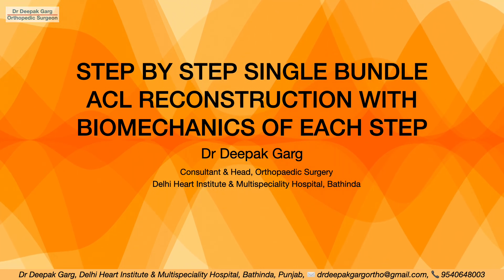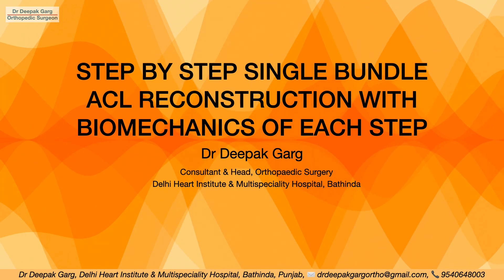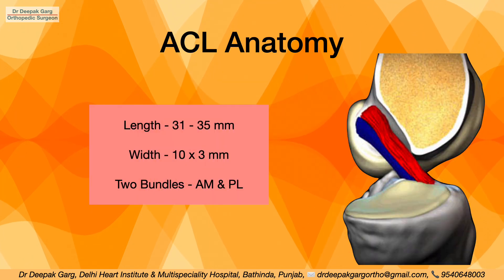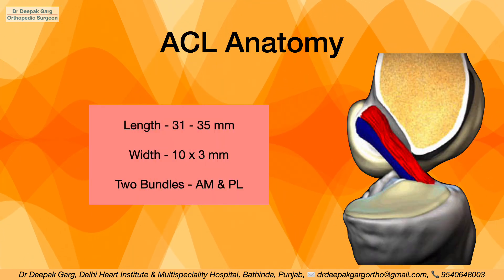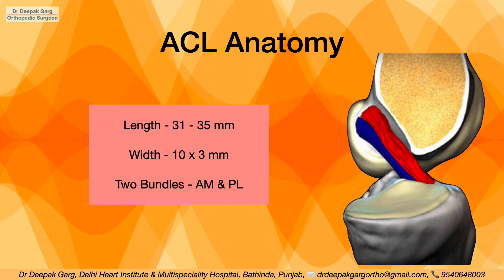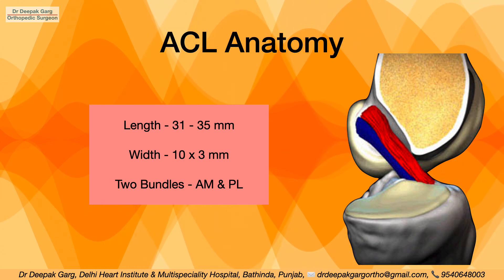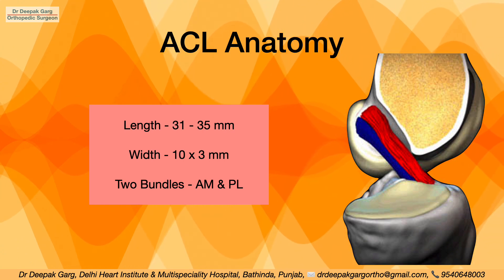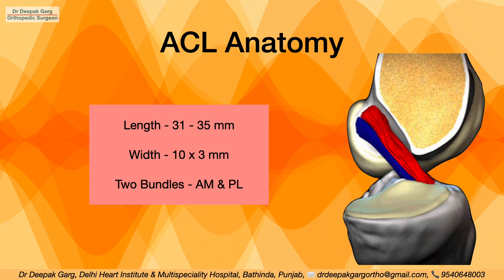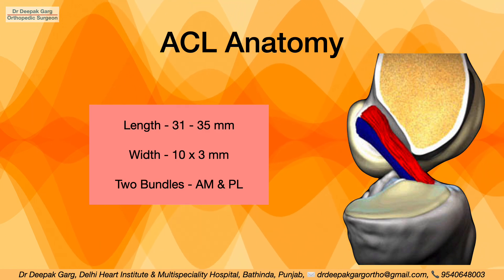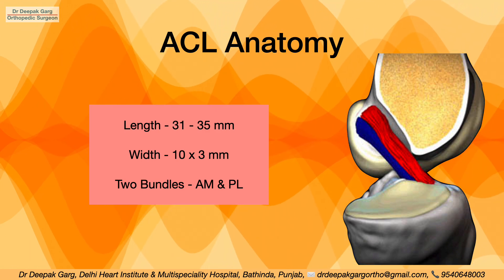Let's first start with the anatomy of the anterior cruciate ligament. The anterior cruciate ligament is approximately 31 to 35 mm in length, the width is approximately 10 mm, and it is approximately 3 mm thick. It has two bundles: anteromedial and posterolateral.